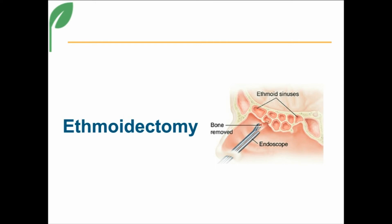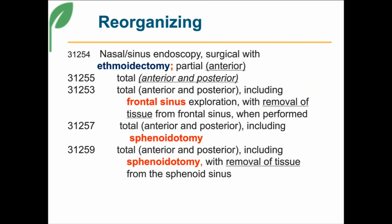I used red font and underlining on the slide so you can see the differentiation between the codes. Partial ethmoidectomy at first glance looks a lot like last year's code, but there's a subtle change — they moved the semicolon. It used to be behind 'surgical'; it's now behind 'ethmoidectomy,' which means all the codes here must have ethmoidectomy built in. The partial is 31254. Code 31255 is total, either anterior or posterior, as described in the diagram.